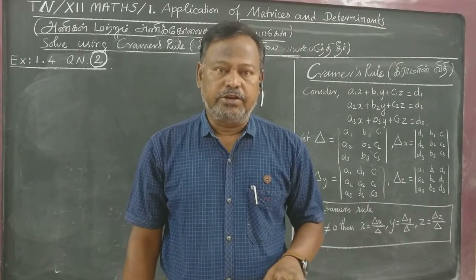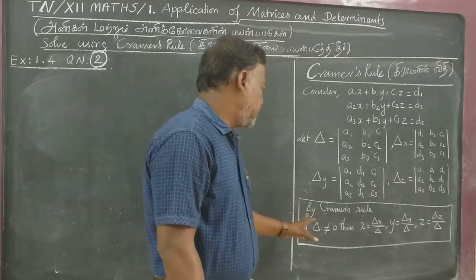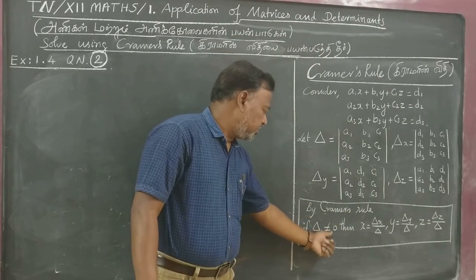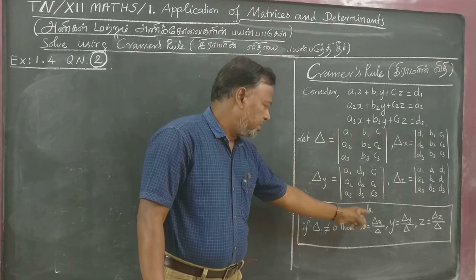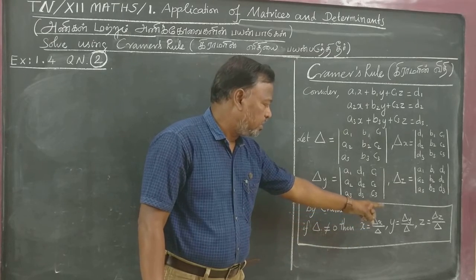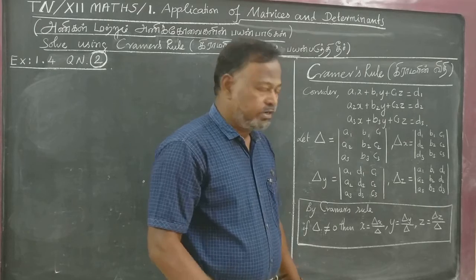First, Cramer's Rule I am thinking. This is Cramer's Rule: If delta is not equal to 0, then x is equal to delta x by delta, y equal to delta y by delta, z equal to delta z by delta.